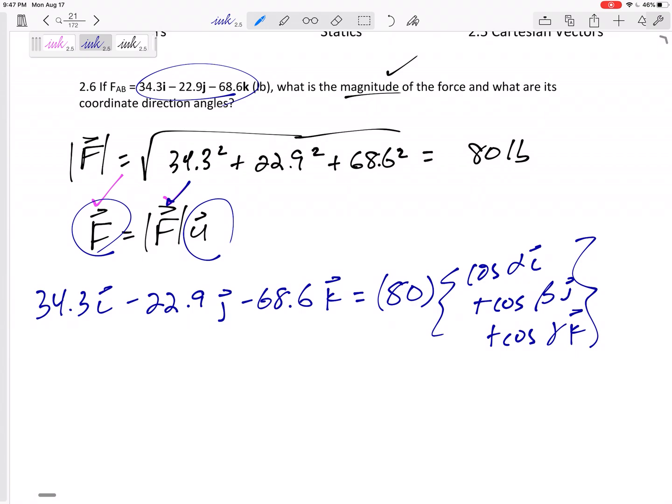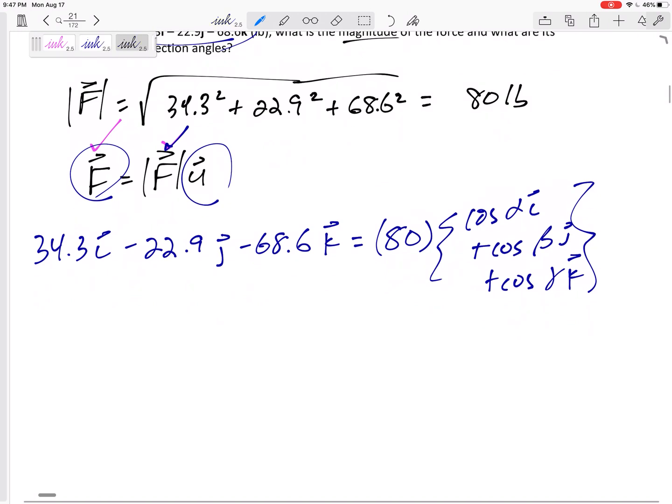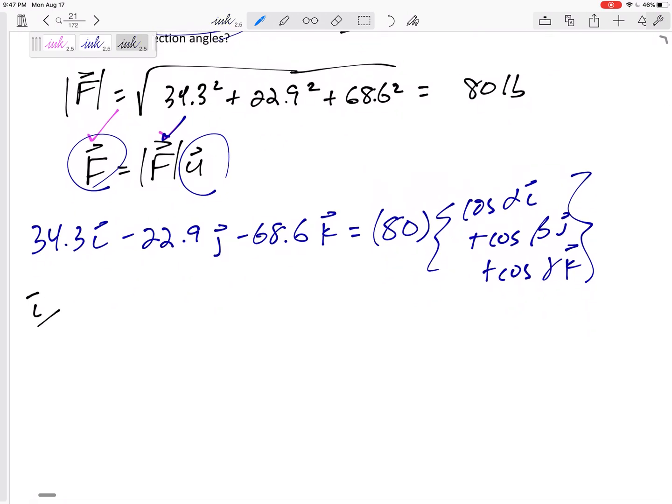And so now here is where I'll say, hey, this is really three different equations. My i equation, my j equation, and my k equation. So this is how I'm going to look at my i equation. What's on the left-hand side? 34.3. What's on the right-hand side? 80 times, because I've distributed this, 80 cosine alpha. So divide that 80 over inverse cosine. I've got alpha 64.6 degrees.